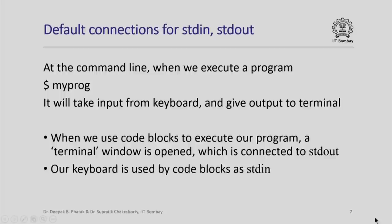The default connections for stdin and stdout are automatically invoked even when we execute a program from a command line. For example, if we say myprog at the command line, it will take input from keyboard and give output to the terminal. When we use Code Blocks to execute our program, a terminal window is opened which is connected to stdout, and our keyboard is used by Code Blocks as stdin.